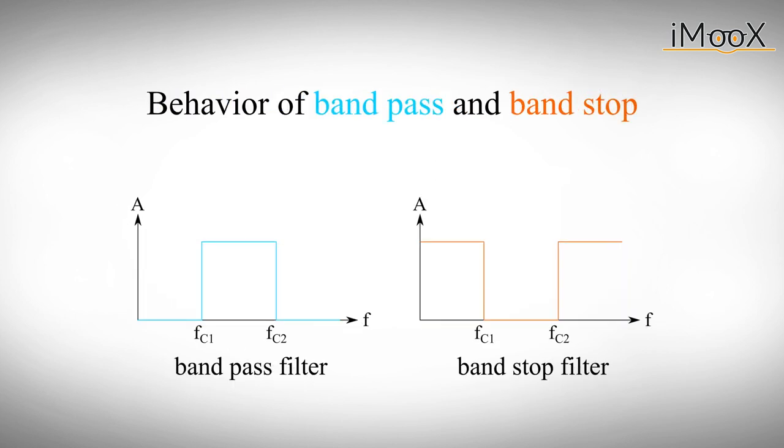We can also build combinations of low pass and high pass to get two more types of filters, the band pass and the band stop filter. These types simply have two corner frequencies, between which lies the pass band or the stop band respectively.